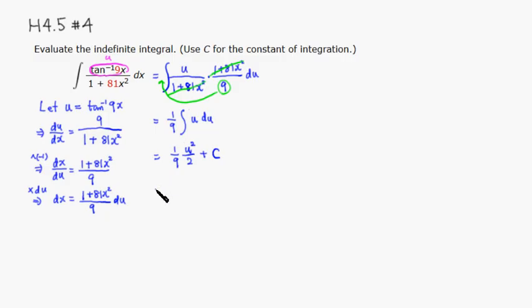So 9 times 2 is 18. So you have 1 over 18 in front. And the u is originally arc tangent of 9x. Then we have to square this. Then plus some constant C.